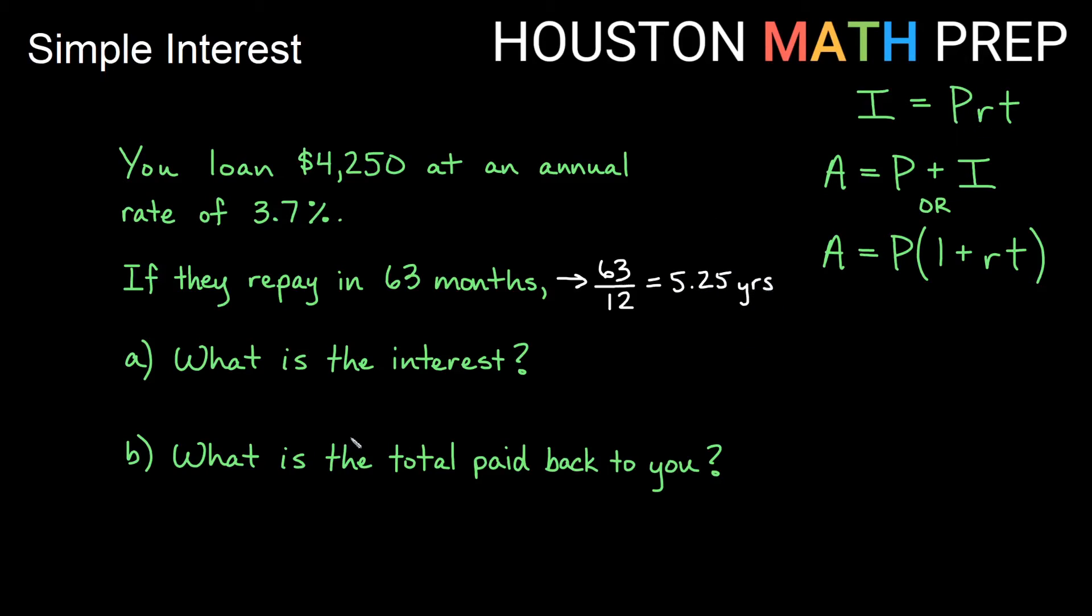So that will be the actual T that we use in the formula. So our interest is going to equal the 4,250 times my annual rate, which is 3.7%. If I move that over two places, notice that I will have to add a zero to get a rate as a decimal. So that will be times 0.037. That's our rate as a decimal. And then my time is five and a quarter years. So times 5.25.